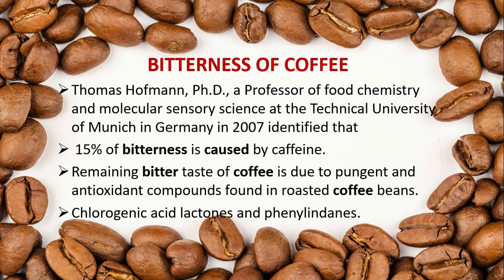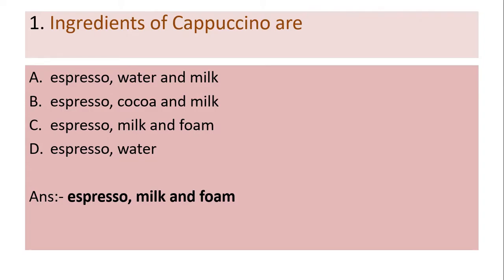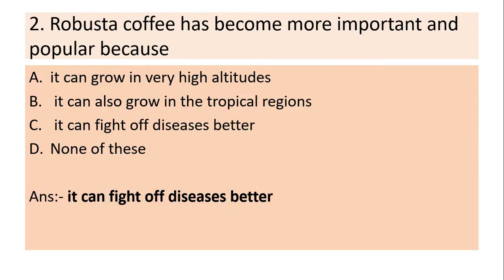First question: The ingredients of cappuccino are — espresso, water and milk; espresso, cocoa and milk; espresso, milk and foam; or espresso and water. Answer: Espresso, milk and foam.